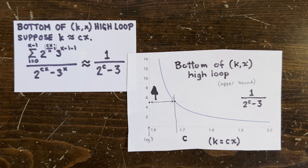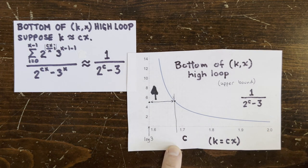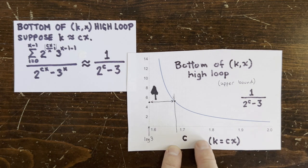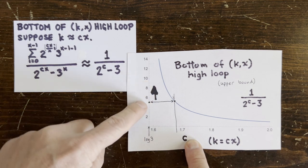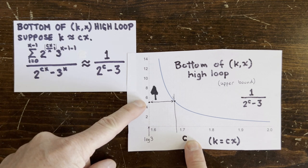If k is more than 2 times x, then the high loop bottom is less than 1 and definitely not an integer. But suppose we want to focus on loops whose members are bigger than 5.